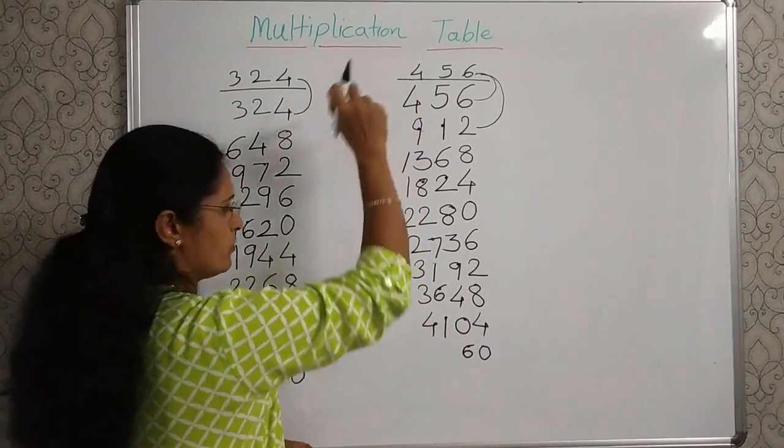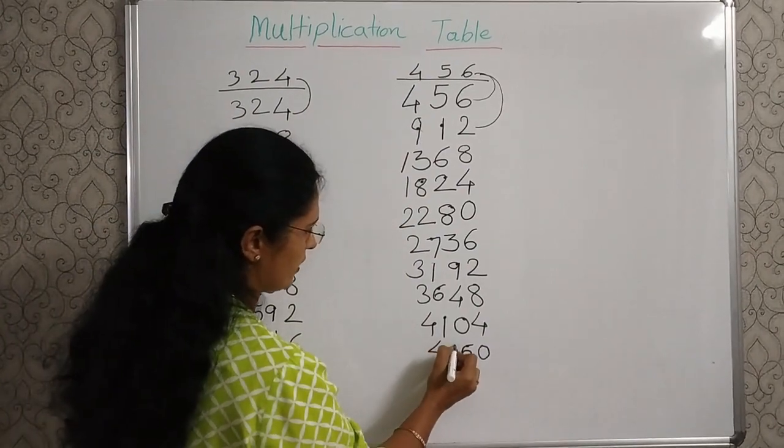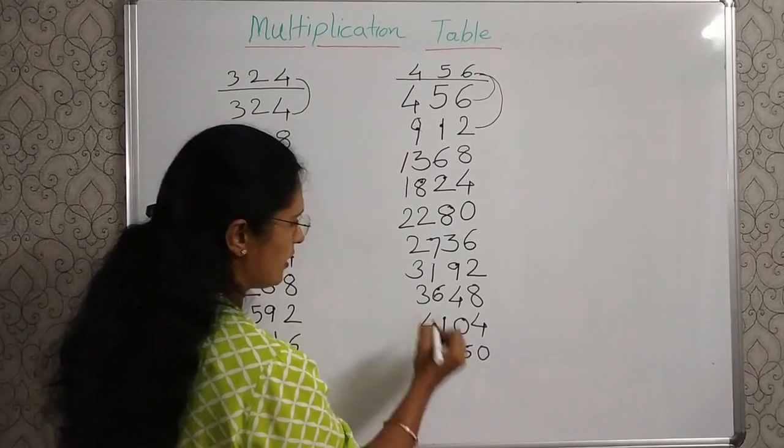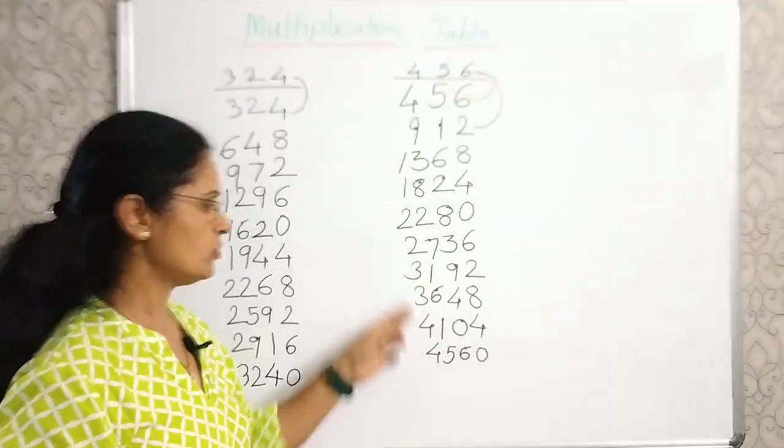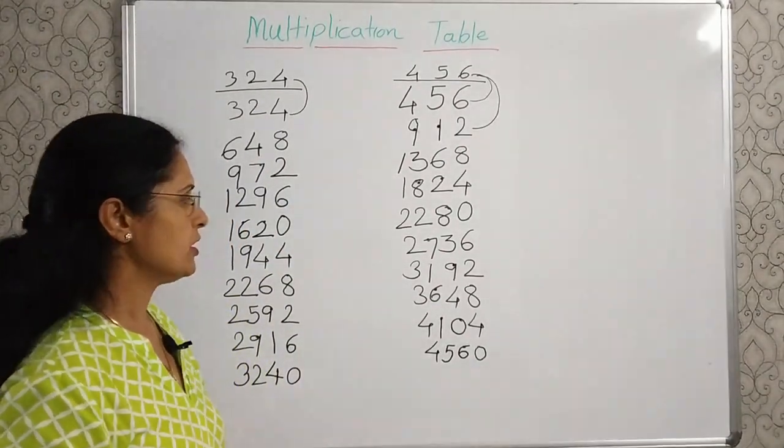41 plus 4, 45. There is no carryover. Write 45. And this is how you completed your multiplication table.